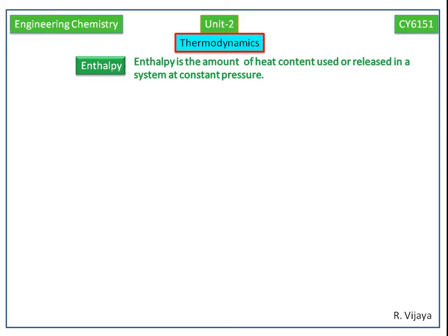Enthalpy is the sum of internal energy U and the product of pressure and volume, i.e. PV, given by the equation. Enthalpy is the state function which purely depends on temperature, pressure, and internal energy.